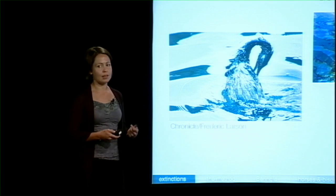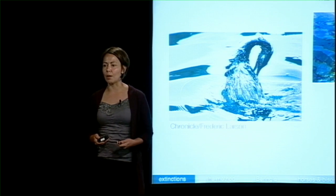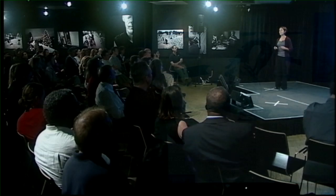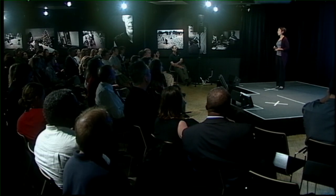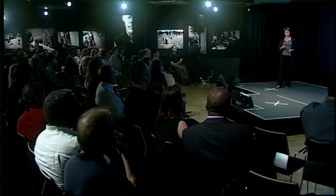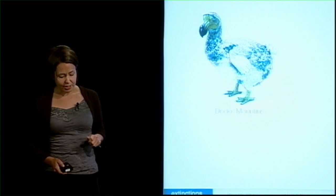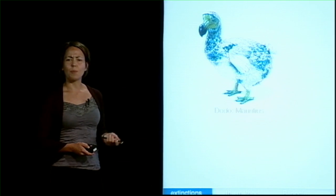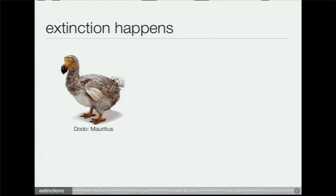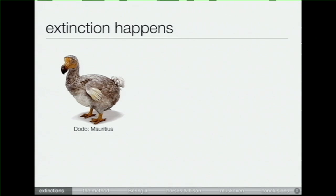We need to understand the impact we're having, because if we can understand how we are changing our environment, maybe we can start to make better predictions and better plans about how to address this major problem. This is the dodo — probably the most famous of all human-driven extinct animals. The dodo went extinct only a couple hundred years ago. It only lived on the island of Mauritius, about 500 kilometers off the coast of Madagascar. Humans first arrived, and dodos were extinct within 50 years.